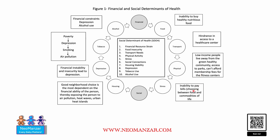Of course, people in poverty are also depressed. The social part affects the other parts too — financial insecurity and poverty lead to depression, smoking, and air pollution. Basically, financial instability is the main feeder in terms of social determinants of health.